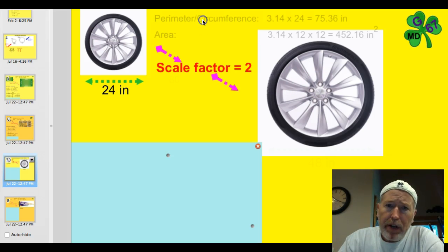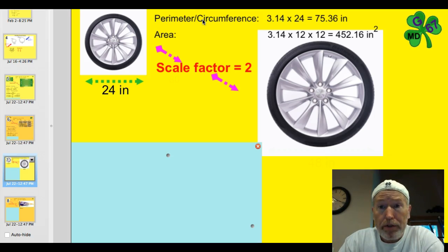So let's just go ahead and figure out what the perimeter, which we call the circumference when we deal with it when it's a circle, and what the area is. So the perimeter or the circumference of this wheel, you take an abbreviation of 3.14 times the diameter, pi d, gives us 75.36 inches. The area of it would be 3.14 times 12 times 12, or pi r r, or pi r squared, which would give us 452.16 inches squared for the area and the circumference of the smaller one.